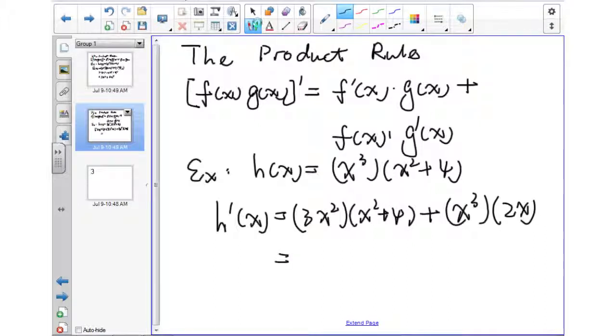Now we can simplify. It will be 3x to the fourth plus 12x squared plus 2x to the fourth.